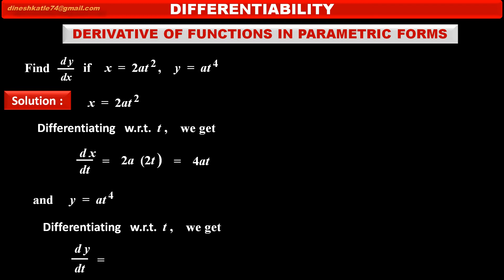The derivative of y with respect to t, dy/dt, equals the constant a times the derivative of t⁴, which is 4t³, giving us 4at³.